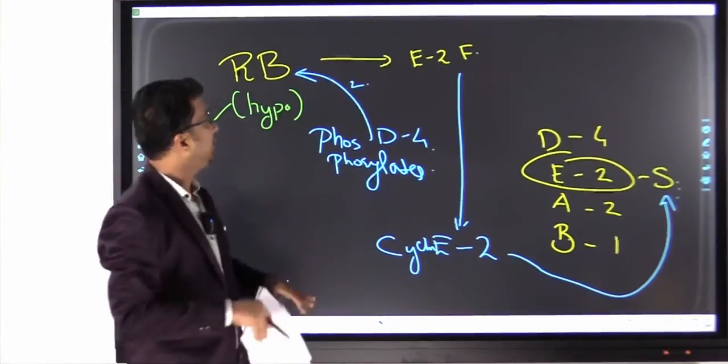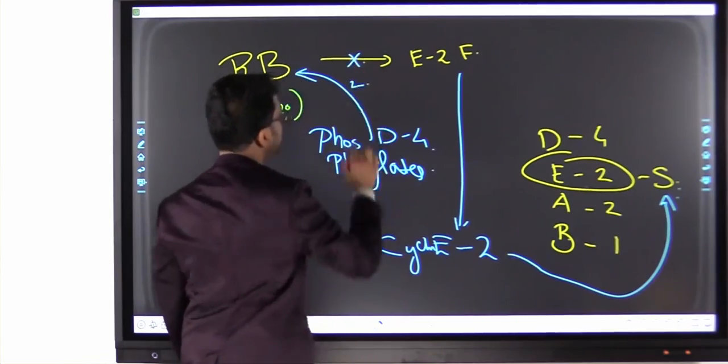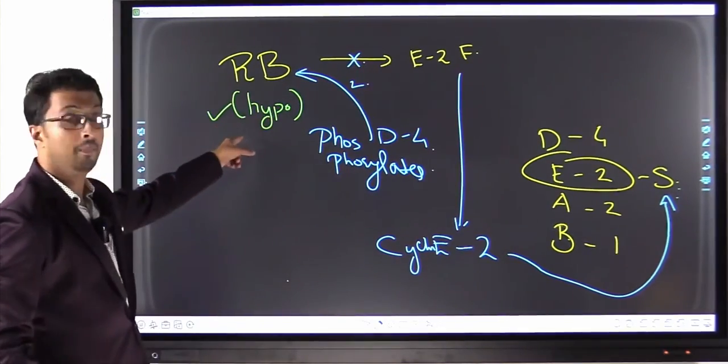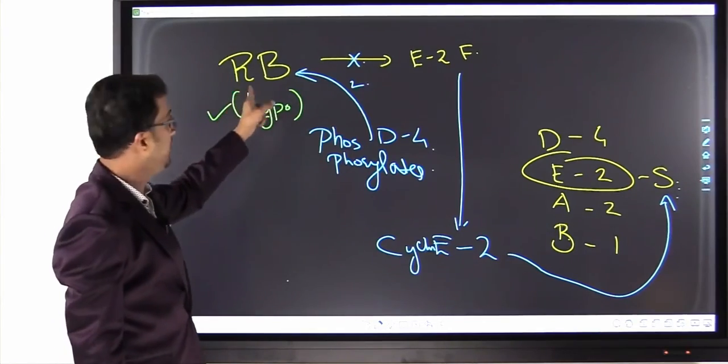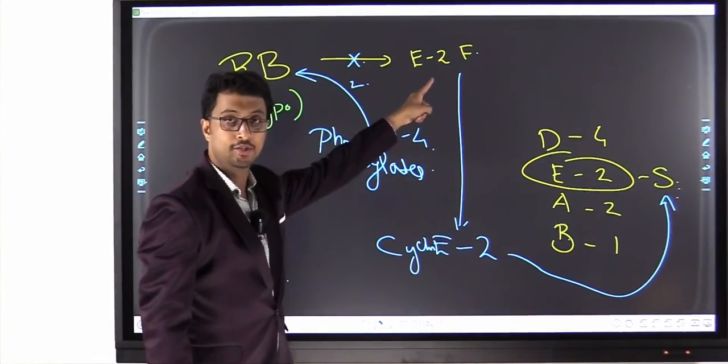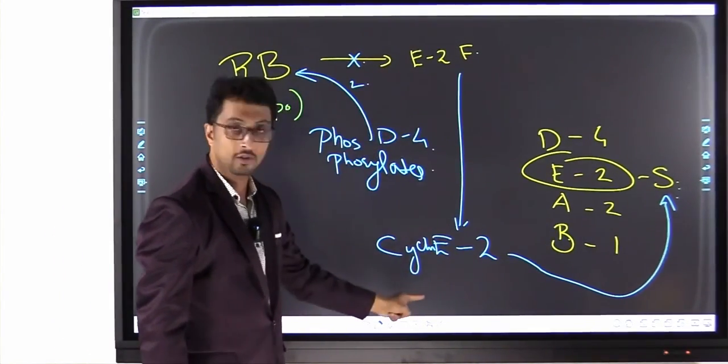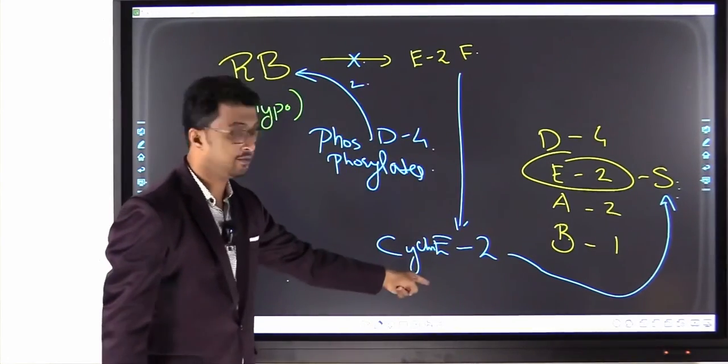RB gene is inhibiting the E2F in its active form. When D4 comes and inactivates RB, this inhibitory effect is lost. You get the synthesis of E. E combines with the cyclin E CDK2.